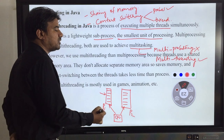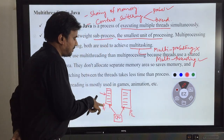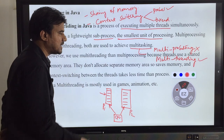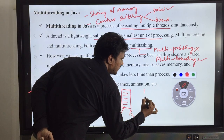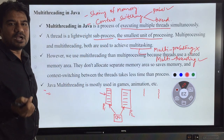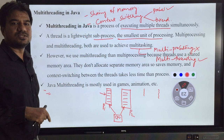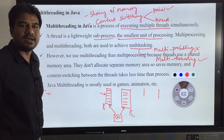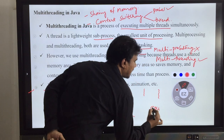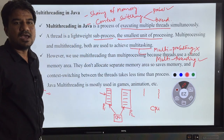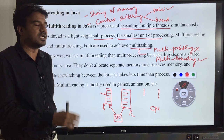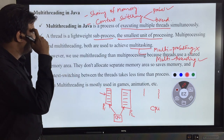When we talk about context switching between threads — where processes are denoted with rectangle boxes and threads are denoted like a thread — context switching between threads is lightweight because they are sharing the same memory. As threads share the same memory, context switching between threads is a lightweight operation.